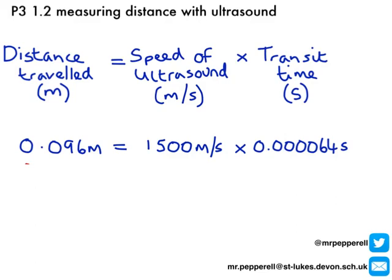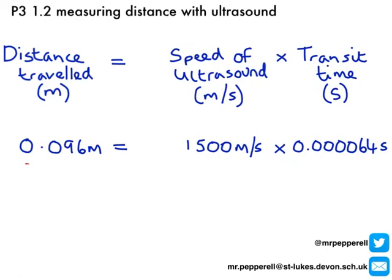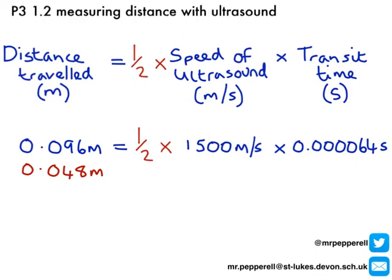But hang on — that's actually a pretty big eye: 9.6 centimetres. Remember, what I've actually calculated is how long it took my pulse to go from the transducer to the back of the eye and back to the transducer again. So I need to change my calculation slightly — I need to multiply the whole thing by a half. So: half multiplied by 1,500 multiplied by 0.000064 seconds gives 0.048 metres, or 4.8 centimetres, or 48 millimetres. That's actually a reasonable distance for the length of an eye.